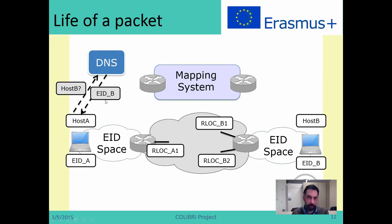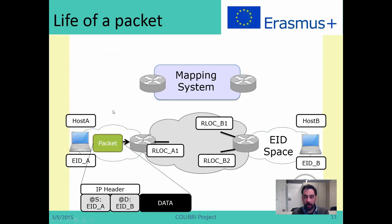As it happens today on the internet, host A will ask the DNS: please tell me which is the IP address of host B. The DNS will reply with an IP address, which in this case we interpret as an EAD — so it will reply with EAD B. Host A will then forward the packet as a standard IP packet, with source address EAD A, destination address EAD B, plus the content, which is the data from the application. This is the IP header. You don't require any change on the host; hosts remain as they are today.